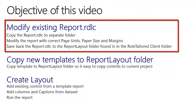To work with template reports, we need to do a couple of things. First, we need to modify the existing report IDLC file found in the Report Layout folder in the RoleTailored client folder. The report IDLC file contains the layout of our report. When we create a new report and no layout exists, the report IDLC file found in the RoleTailored client folder will be used. Modifications cannot be done directly in the Report Layout folder, so we need to copy the file to a separate folder, do our modifications there, and then save it back.